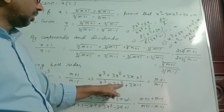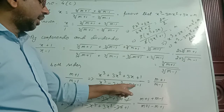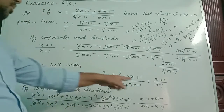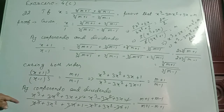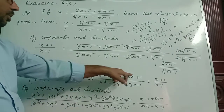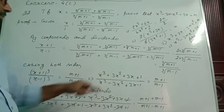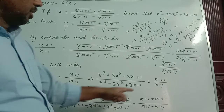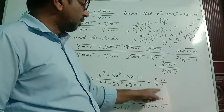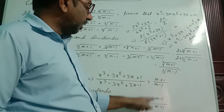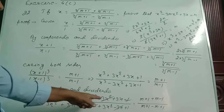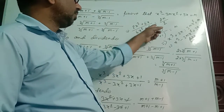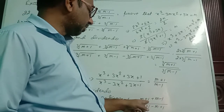So we have x cube minus 3x square plus 3x minus 1 in the denominator and x cube plus 3x square plus 3x plus 1 in the numerator, equal to m plus 1 by m minus 1. Again, I have used componendo dividendo. Adding numerator and denominator on both sides: the plus terms and minus terms cancel, and we are getting 2x cube plus 6x by 6x square plus 2 equals 2m by 2.